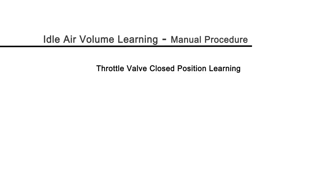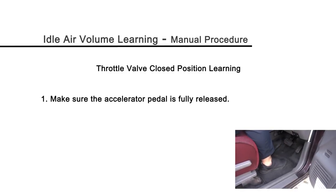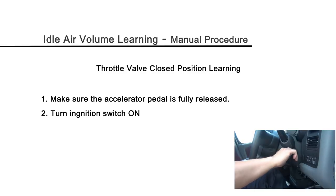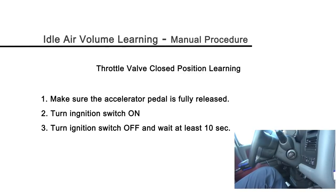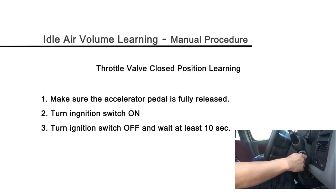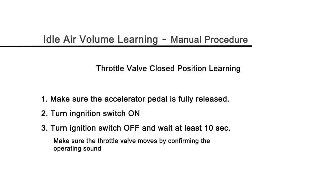For throttle valve closed position learning: make sure the pedal is fully released. Turn the ignition switch on, then turn it off and wait at least 10 seconds. Make sure that the throttle valve moves during those 10 seconds by confirming the operating sound.